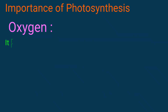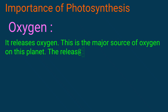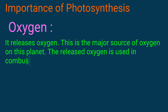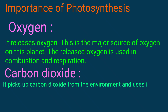Oxygen is released during photosynthesis, and this is the major source of oxygen on this planet. The released oxygen is used in combustion and respiration.